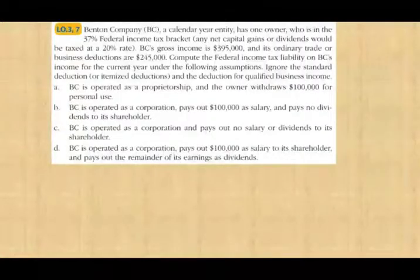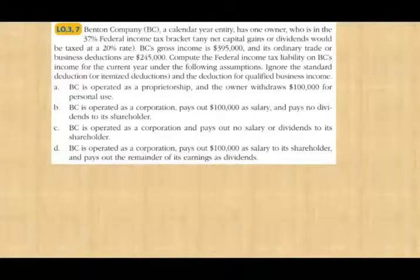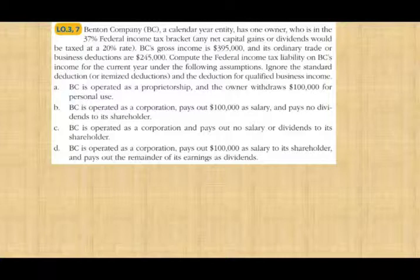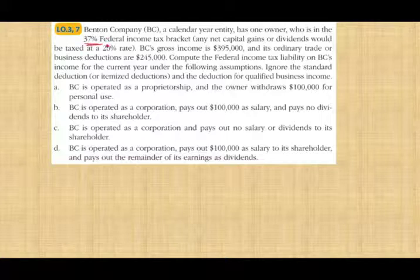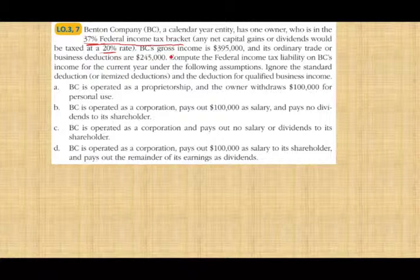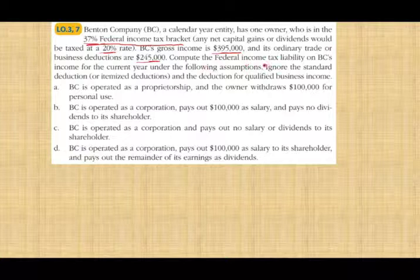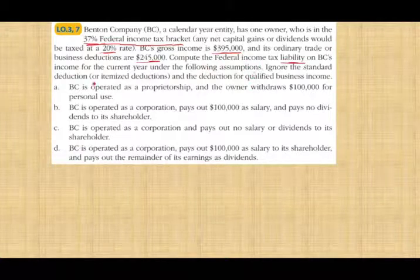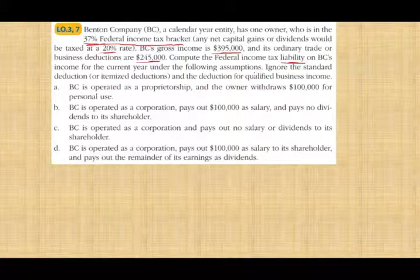The best way to illustrate these concepts and compare corporate versus individual taxation is to work through an example. The individual owner is in the 37% tax bracket, and any net capital gain or dividend will be taxed at 20%. BC's gross income is $395,000 and its ordinary trade or business deduction is $245,000. We'll compute the federal income tax liability under various scenarios, ignoring the standard deduction, itemized deduction, and the deduction for qualified business income.